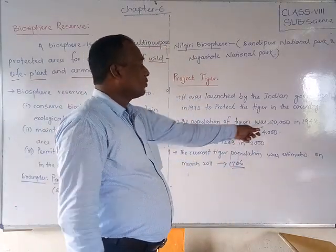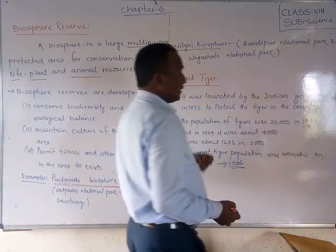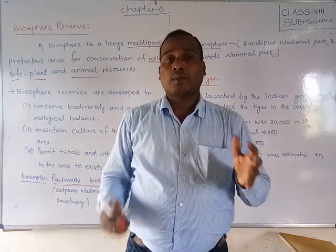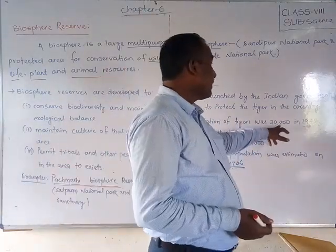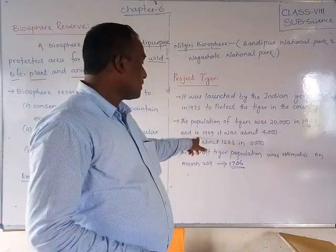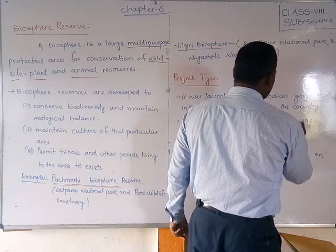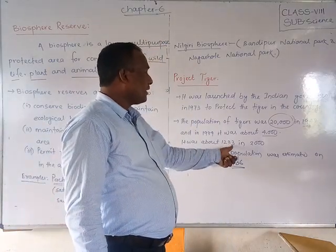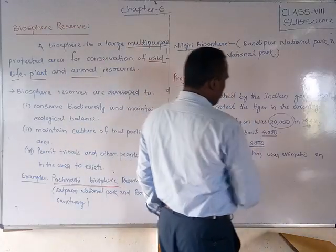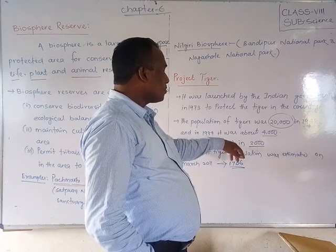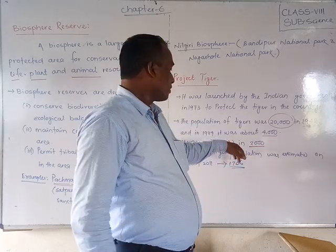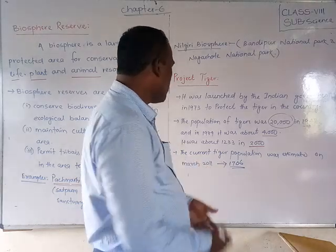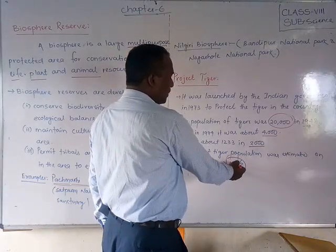The population of tigers was around 20,000 in 1948. But by 1989 it was only about 4,000 — meaning 16,000 tigers had vanished from India. By the year 2000, it had decreased further to only 1,233. Then in March 2011, the tiger population was estimated at 1,706 — a slight increase.